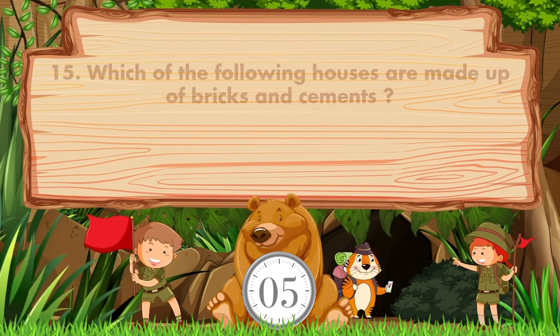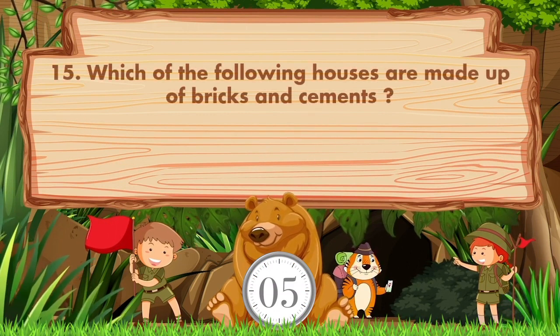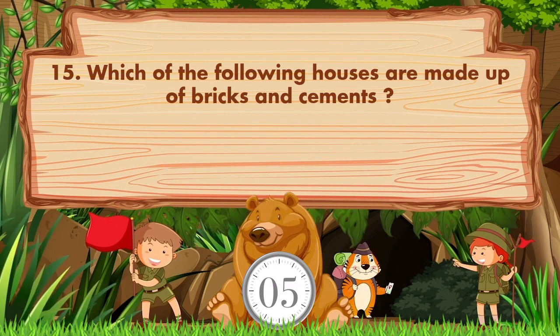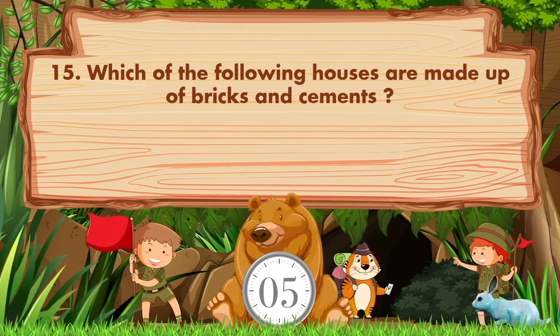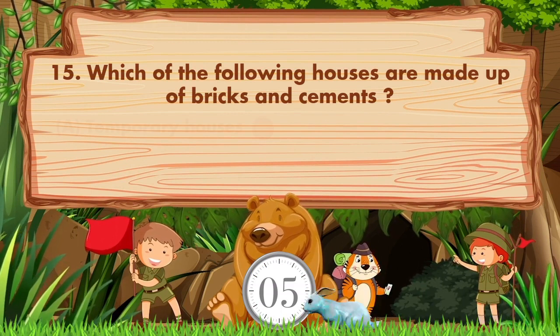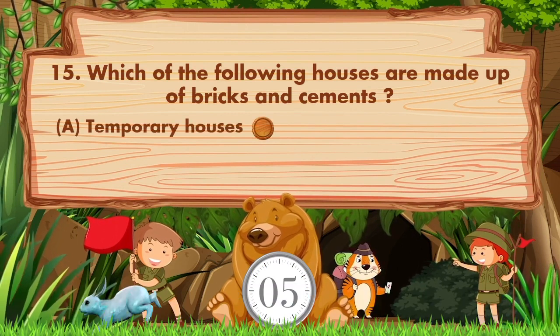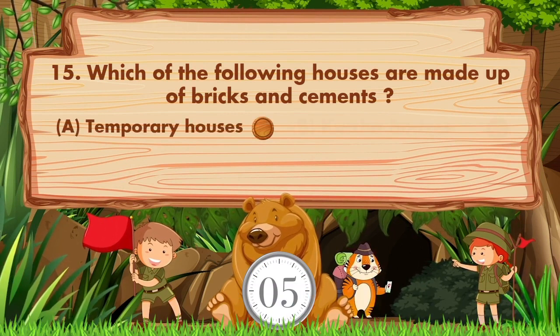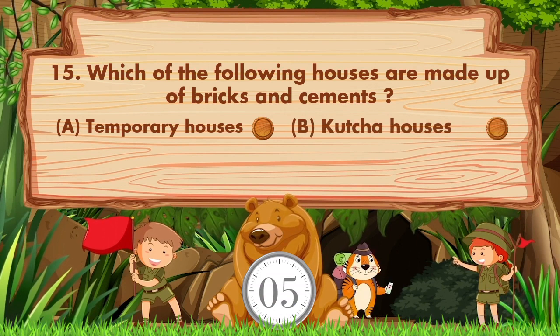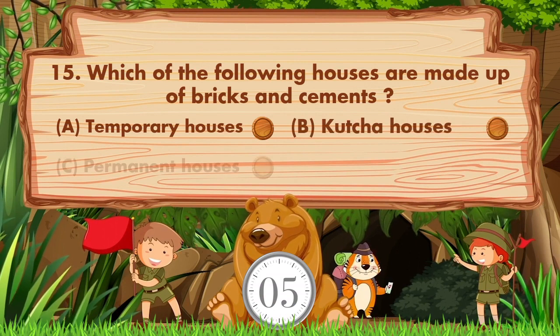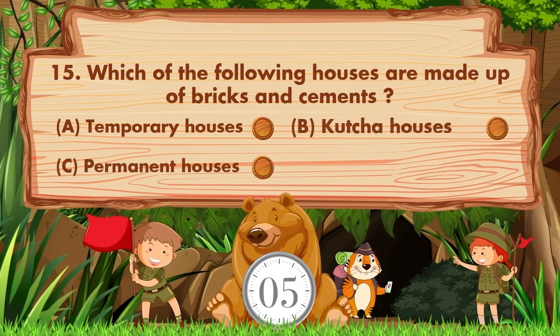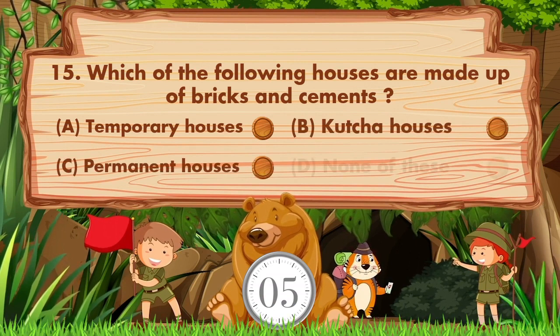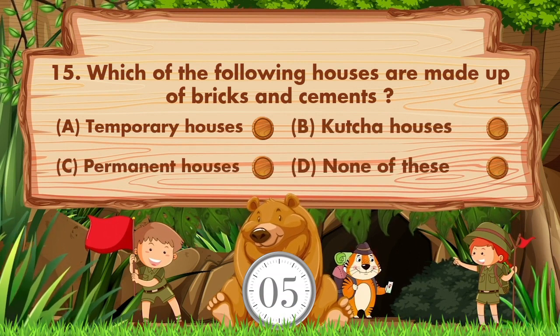Which of the following houses are made up of bricks and cement? Option A is temporary houses, B kacha houses, C permanent houses, D none of these. Answer is option C: permanent houses.